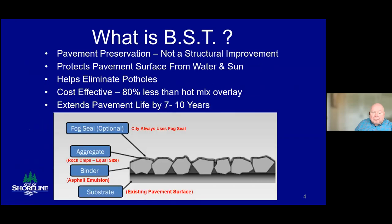Bituminous surface treatment — some call it chip seal — is a pavement preservation method used by many cities and counties in Washington. Typical asphalt paving, like you have on your street today, without maintenance or preservation, has a life in service of about 20 years. A single BST treatment can add up to 10 years of additional service life when applied before the pavement reaches a seriously deteriorated state. I want to emphasize that BST itself is not a pavement structure upgrade, although it does benefit the pavement structure by sealing it against water intrusion from the pavement surface.